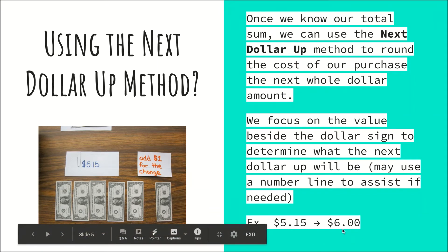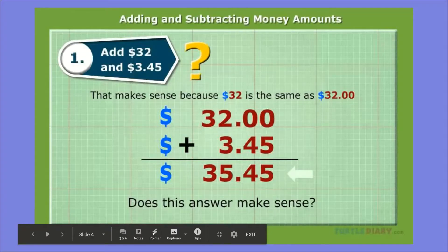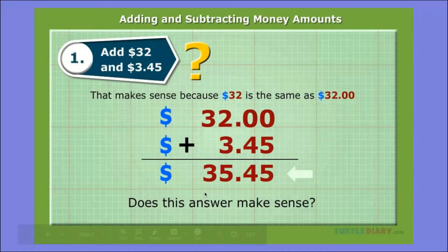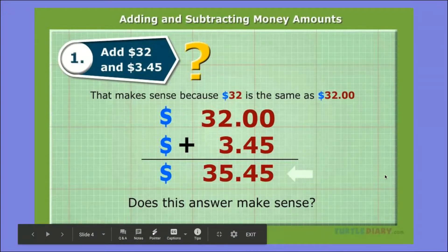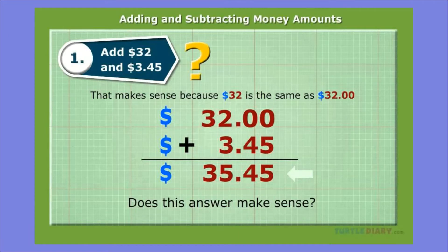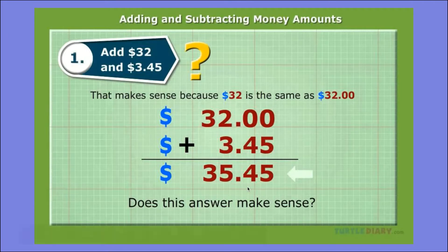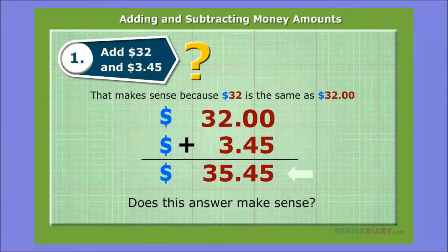Looking at our previous example: if the total price is thirty-five dollars and forty-five cents, I look at the digits next to the dollar sign — thirty-five — and ask what comes after thirty-five. It's thirty-six, so my next dollar up purchase would be thirty-six dollars. That way I don't have to struggle with counting change at the register.